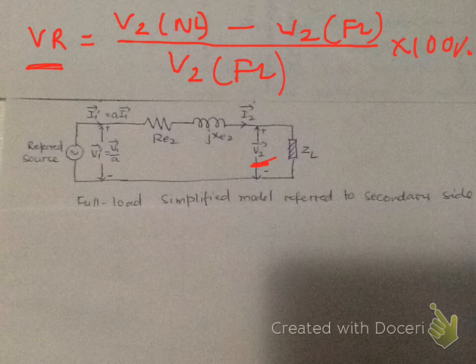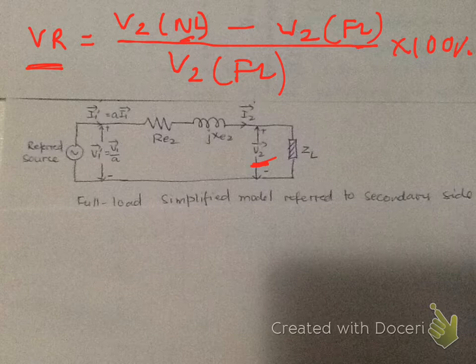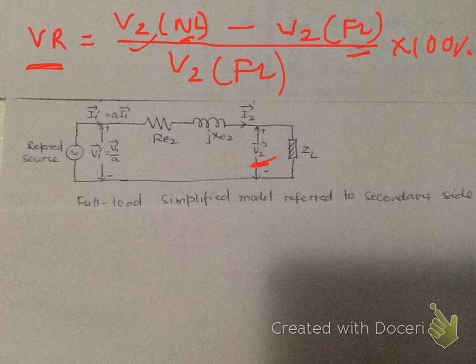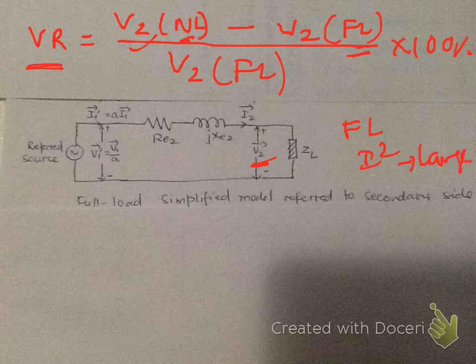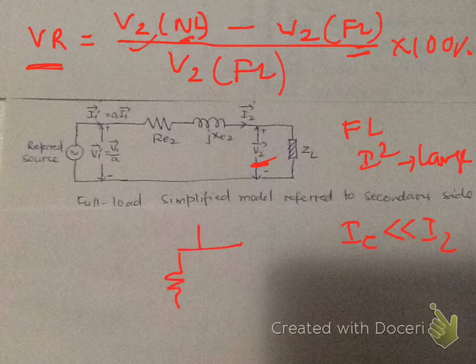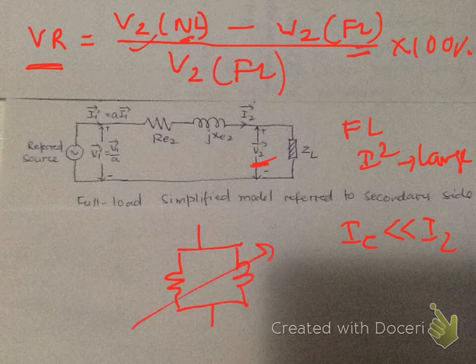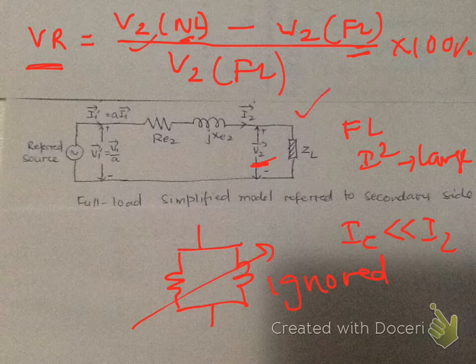Voltage regulation is as small as possible. We work with no-load and full-load values. At no load, V2 is basically your rated voltage, known from the transformer ratings. For full load, we use the transformer equivalent circuit. When I2 is large, we can ignore the excitation branch IE, leaving a simplified equivalent circuit with only RE and XE.